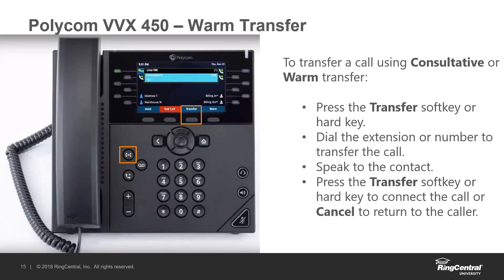To transfer a call, the default transfer type for these phones is what Polycom calls a consultative transfer — or what most people call a warm transfer. So if I was transferring a call to Josh, I would talk to Josh first and then send the caller off to them. This default transfer type can be changed in the settings. If you want to change it to a blind transfer, press the home button, navigate to settings, and under basic settings and preferences at the very bottom is 'default transfer type.' You can switch that from consultative to blind.